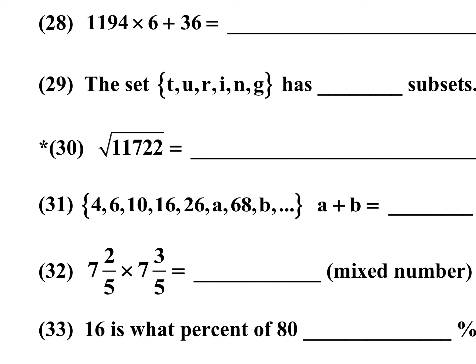Number 31 looks like a Fibonacci-type sequence: 4 plus 6 is 10, 6 plus 10 is 16, 10 plus 16 is 26, 16 plus 26 is 42, 26 plus 42 is 68, and 42 plus 68 is 110. They want a plus b: 42 plus 110 is 152. Add the two terms to get a, then a plus 68 to get b, then add a plus b.